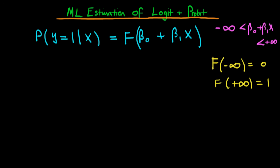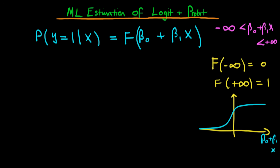If we were to draw a quick graph of this, it would look something like this: as our linear combination of independent variables — which is our x-axis, so beta 0 plus beta 1 times x — increases, the function increases asymptotically towards 1, and as our linear combination tends towards minus infinity, our function tends to take on a value of 0.